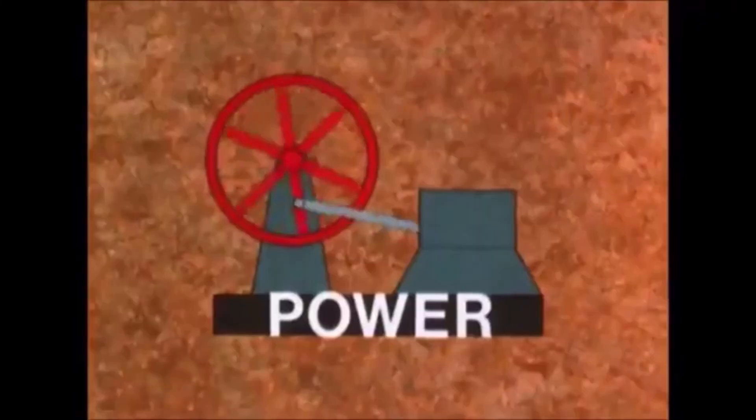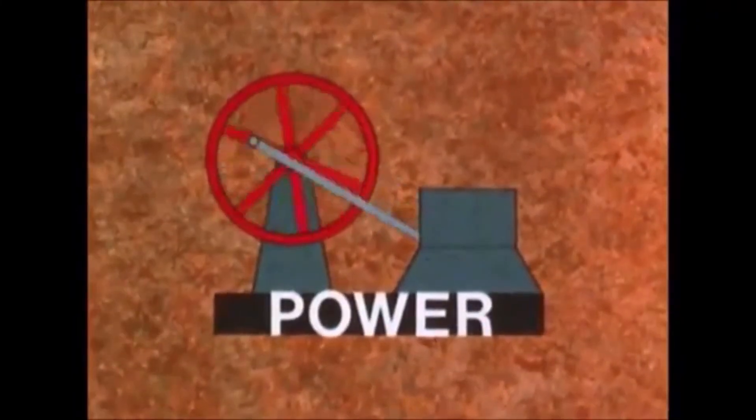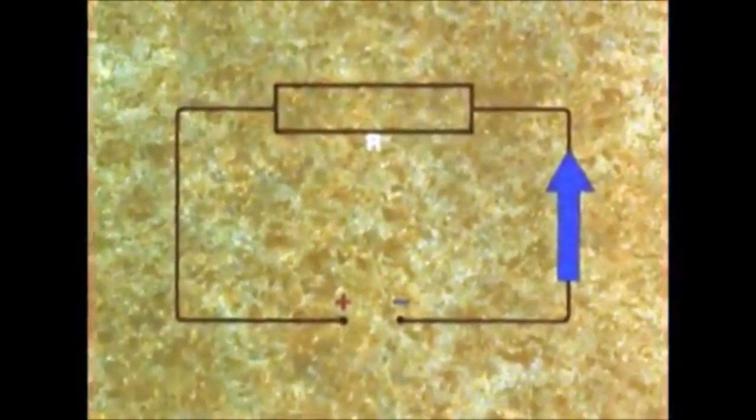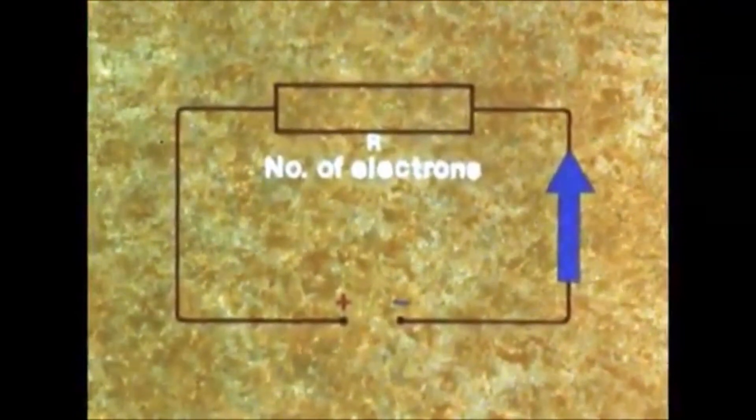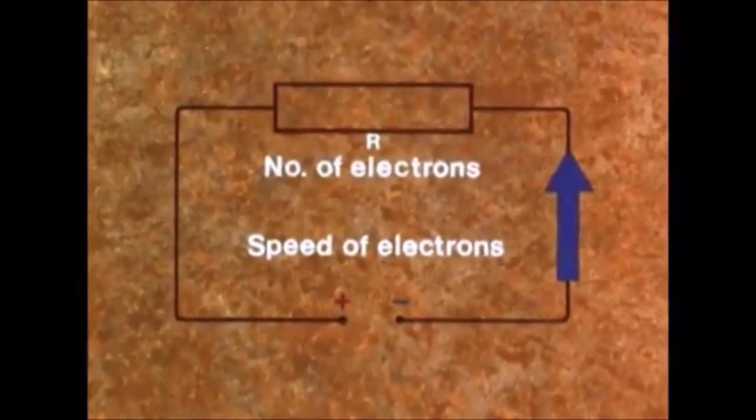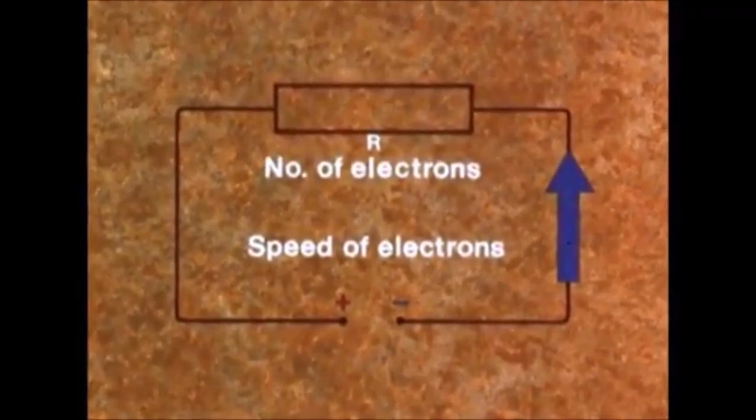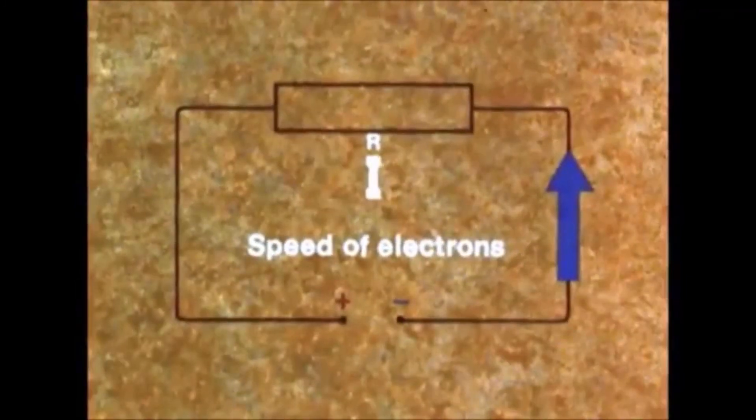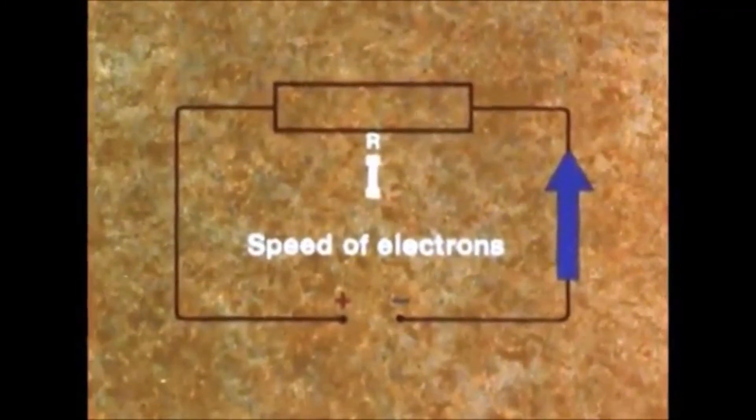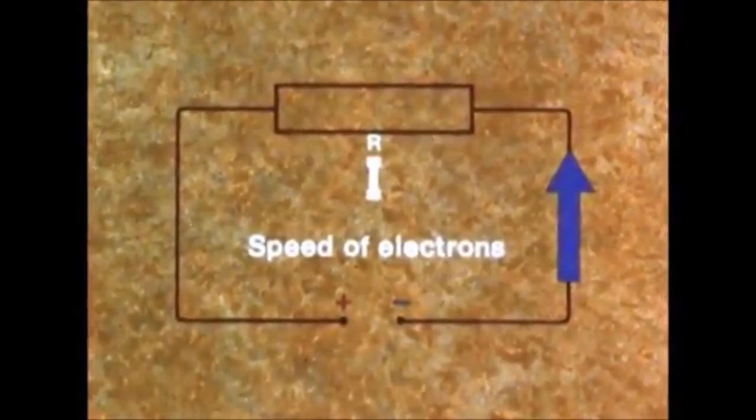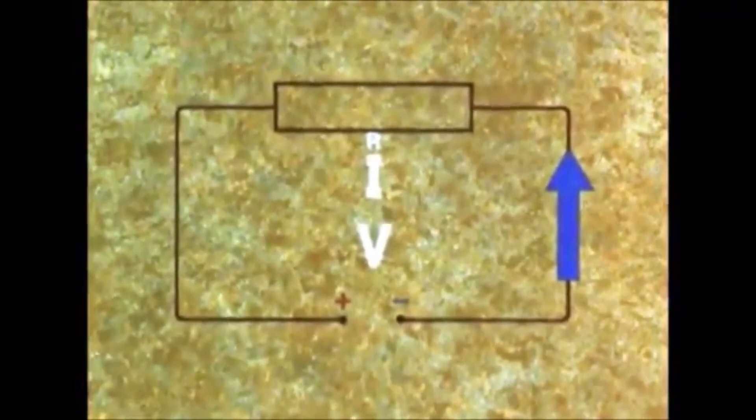The rate at which work is done is called power. In an electric circuit, the power depends on the number of electrons moved and the speed at which they travel. The number of electrons moved is the current flowing in amps, I, and the speed depends on the voltage V driving them around.